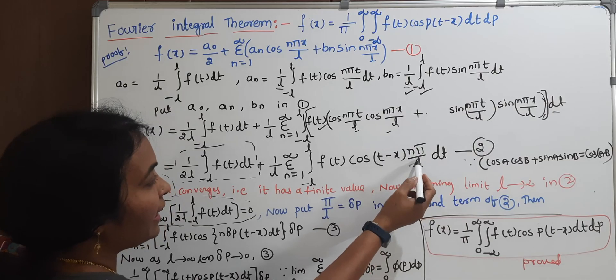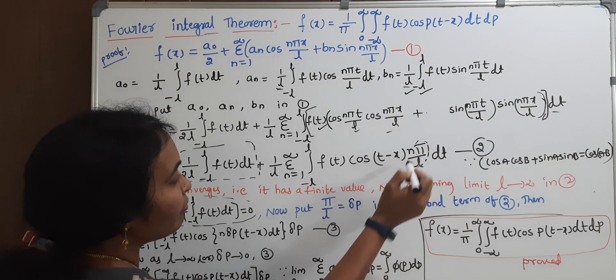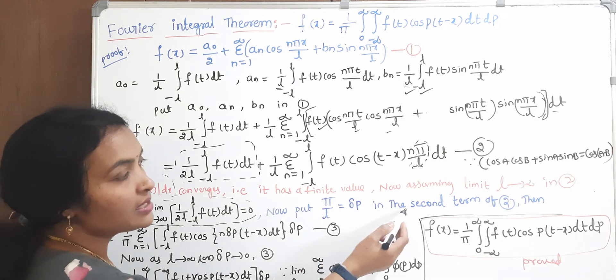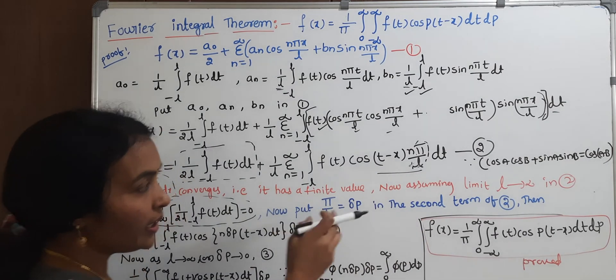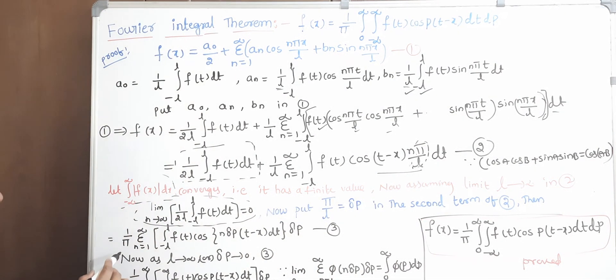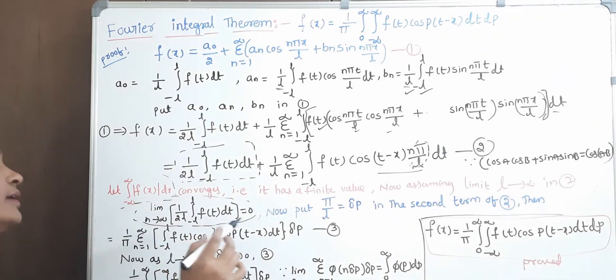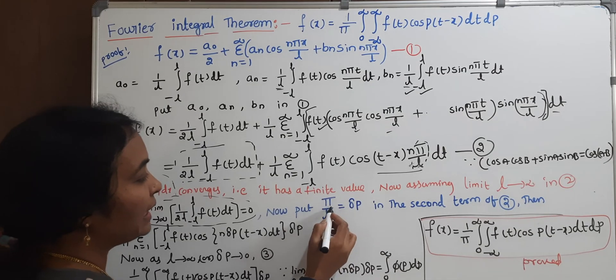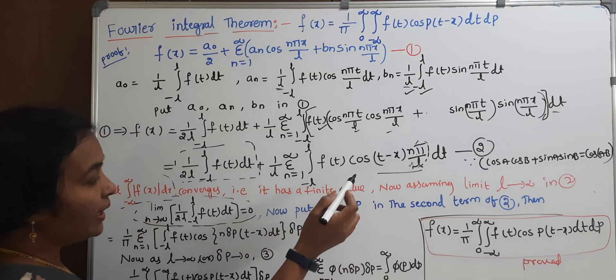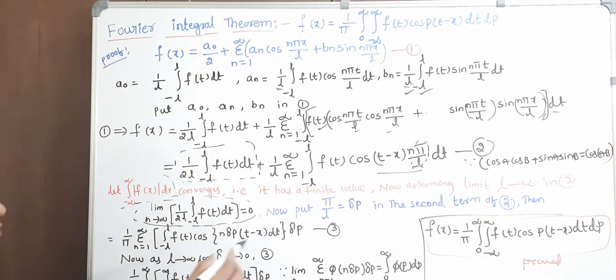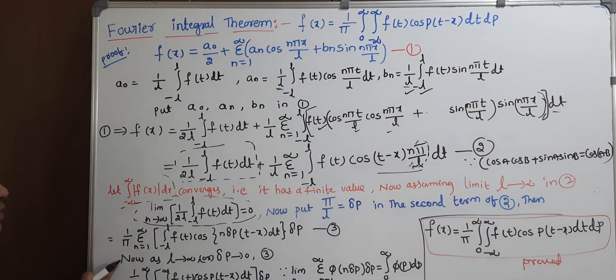Now, if you put pi by l, because in our series we have n·pi / l. In place of pi / l, I will put delta p in the second term. In equation 2, n·pi / l is equal to delta p. Then l is equal to pi by delta p, and it is delta p tends to 0.